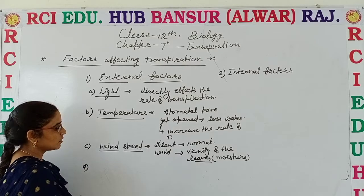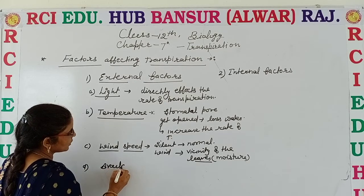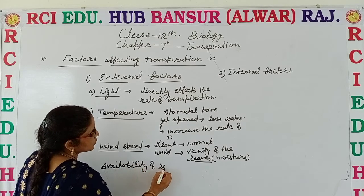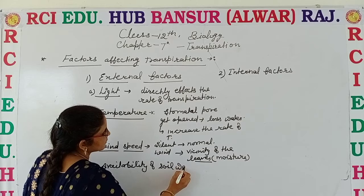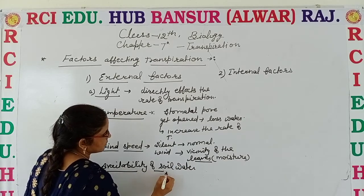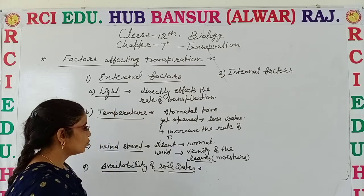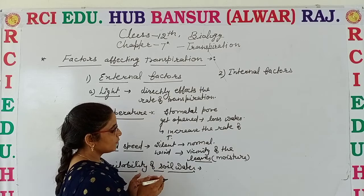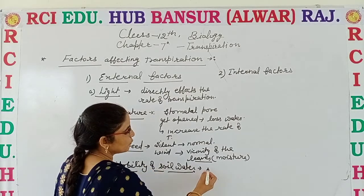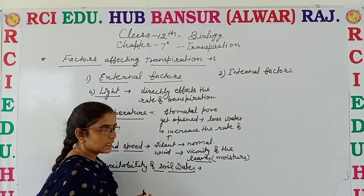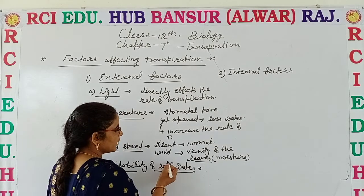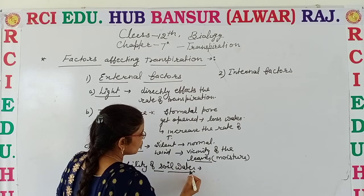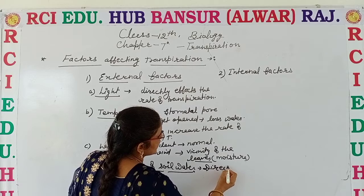The last external factor is availability of soil water. As we know, especially capillary water is available for plants. If a sufficient amount of water is not available for the plants, then it directly affects the rate of transpiration. So the amount of water available to the plants also directly affects the rate of transpiration.